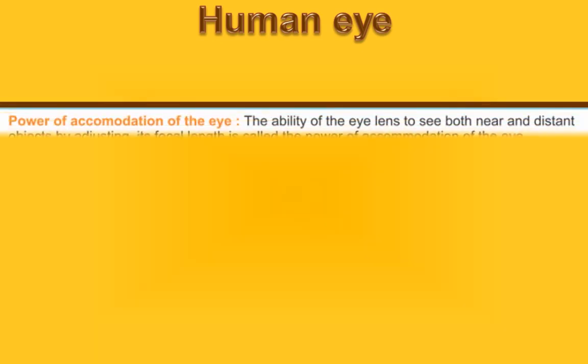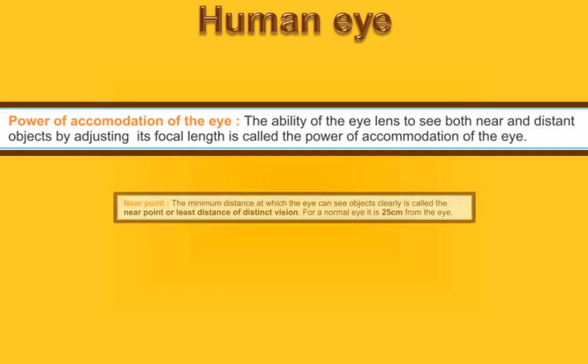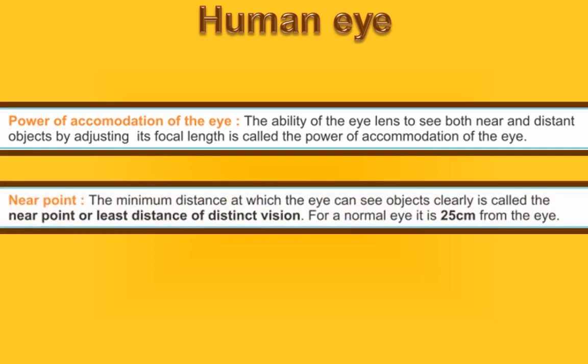Now let us see some important terms with respect to the eye. Power of accommodation of the eye: the ability of the eye lens to see both near and distant objects by adjusting its focal length is called the power of accommodation of the eye. Near point: the minimum distance at which the eye can see objects clearly is called the near point, or least distance of distinct vision. For a normal eye, it is 25 cm from the eye.